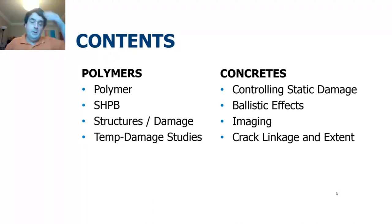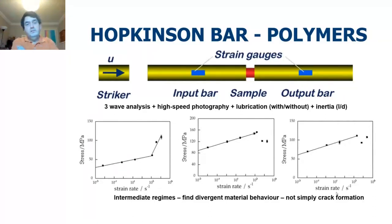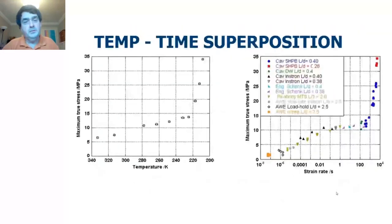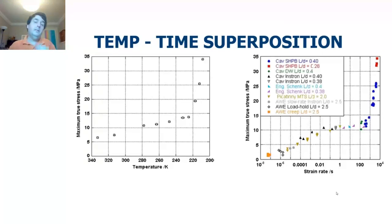You've seen this slide before — Hopkins and Barr — various ideas that we get divergent behavior at intermediate strain rates 10³ to 10⁴ for a range of polymer structures. This data said there was divergent material behavior; it was not just simply crack formation. A crack is a form of damage — probably the one we think about most. I said there was a temperature-time superposition for the mechanical flow and for the maximum stress in the material.